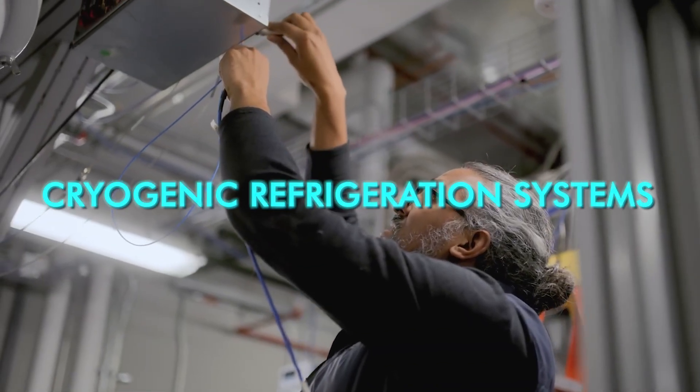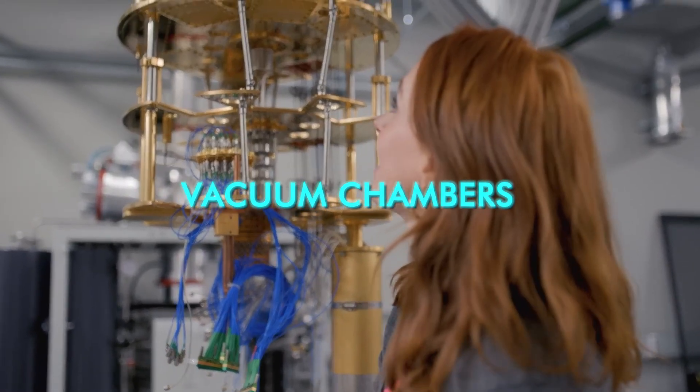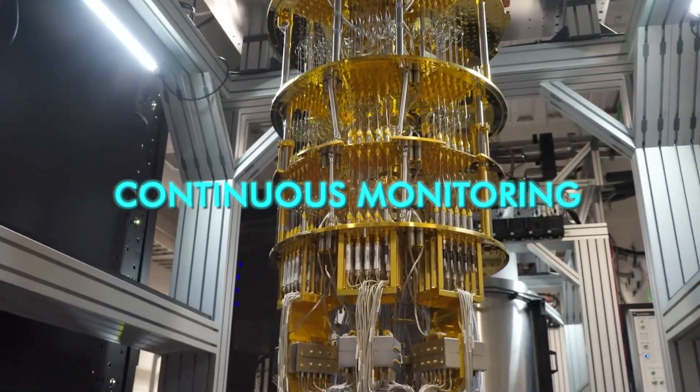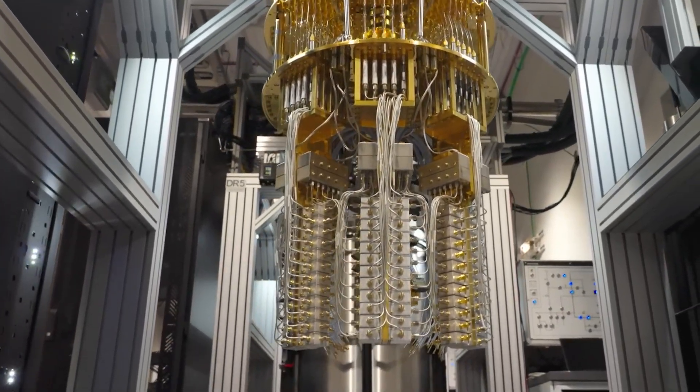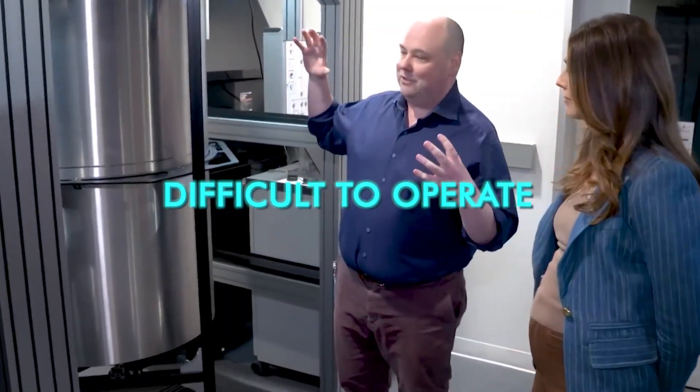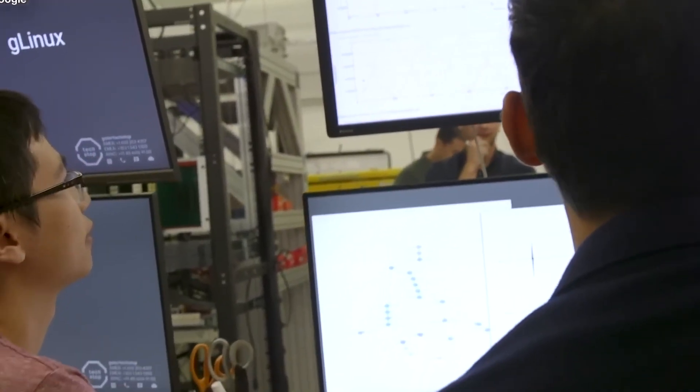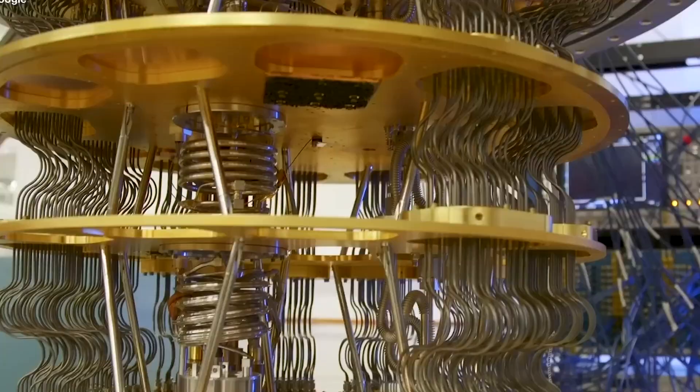But achieving and maintaining those conditions is extraordinarily difficult. It requires massive cryogenic refrigeration systems, layers of shielding, vacuum chambers, and continuous monitoring. These systems consume huge amounts of energy and occupy large physical spaces. These machines are impressive, but they're also fragile, expensive, and difficult to operate. Scaling them beyond research environments has proven slow and costly. Even companies at the forefront of quantum research struggle to deploy these systems outside specialized facilities.